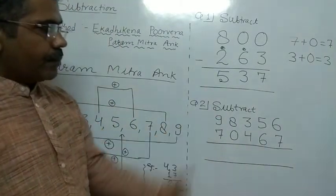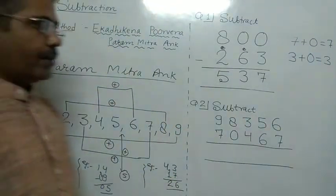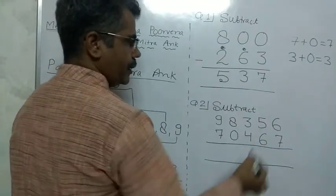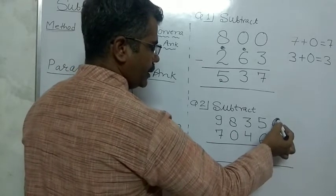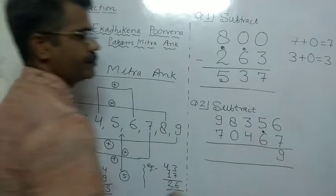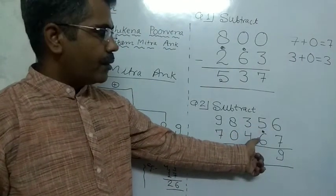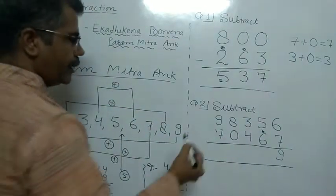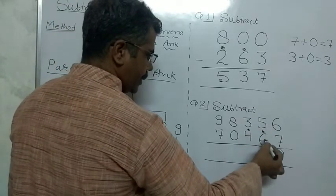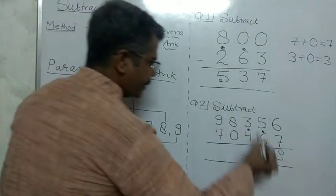Next question: subtract this number. Here 7 cannot be subtracted from 6. Pramikkar Ankh of 7 is 3. 3 plus upper digit 6 gives 9. We write 9 here and apply Ekatecane. Next, 7 cannot be subtracted from 5, so we use Ekatecane Purvend. Pramikkar Ankh of 7 is 3. 3 plus 5 is 8.